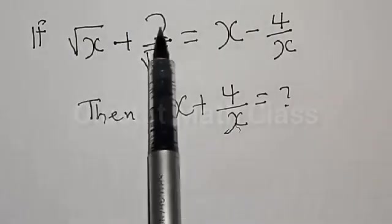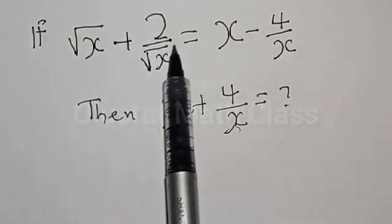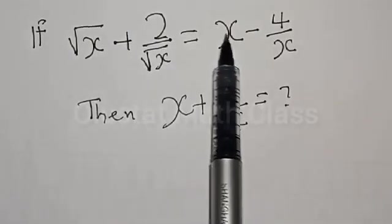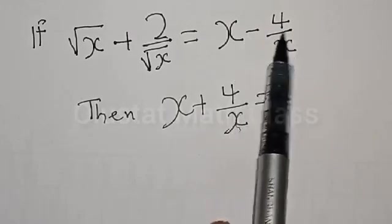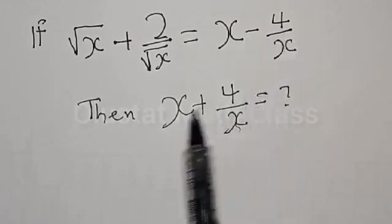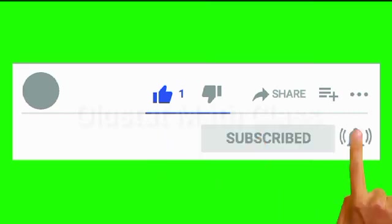Square root of s plus 2 divided by square root of s equals x minus 4 divided by x. But before we proceed, please don't forget to like, share, comment, and subscribe. Thank you.